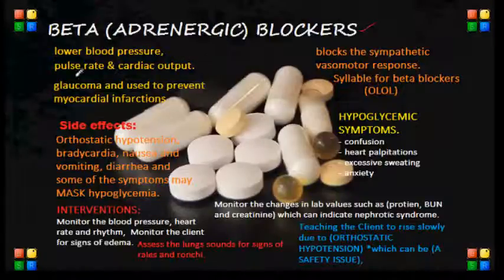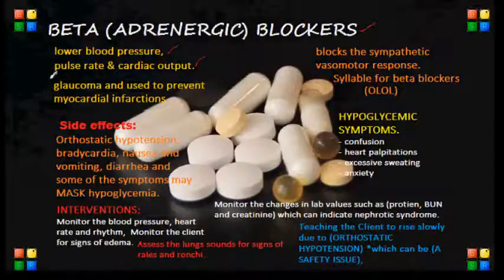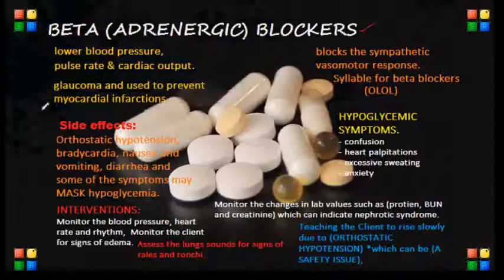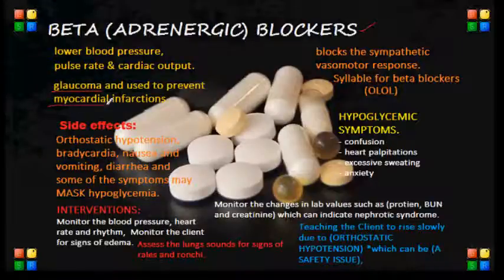As you guys have learned in nursing school, beta adrenergic blockers are drugs that help lower the blood pressure, the pulse rate, and the cardiac output. Beta blockers are going to be an important set of drugs that you might encounter in your NCLEX exam, so try to pay close attention. Sometimes beta blockers are used to treat migraine headaches and other vascular headaches. Other uses include treating glaucoma, and they are also used to prevent myocardial infarctions.